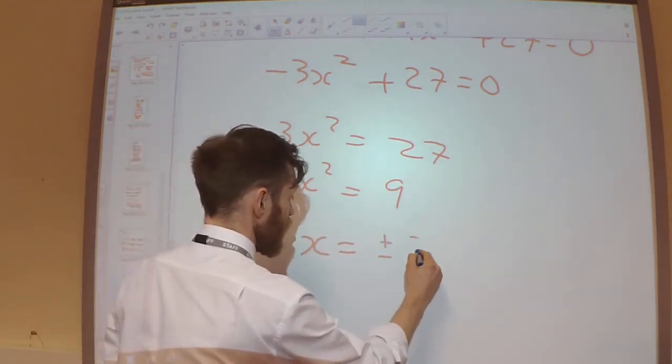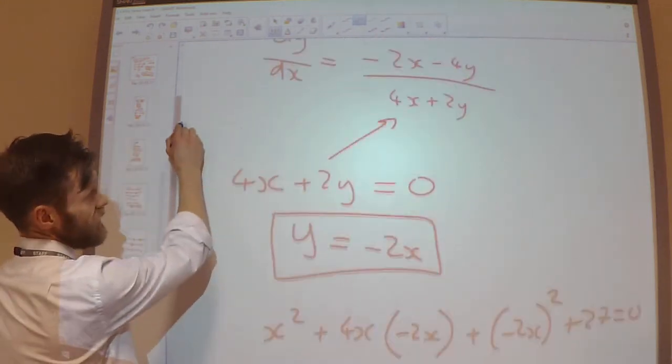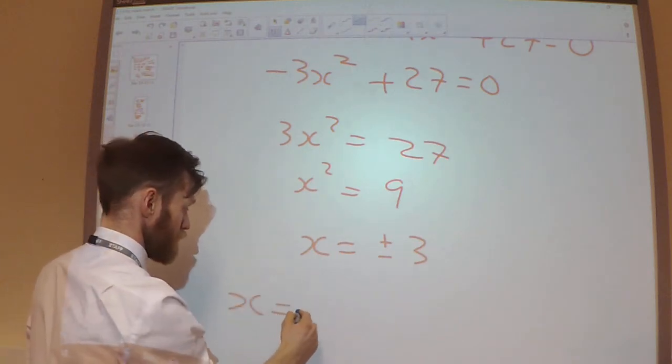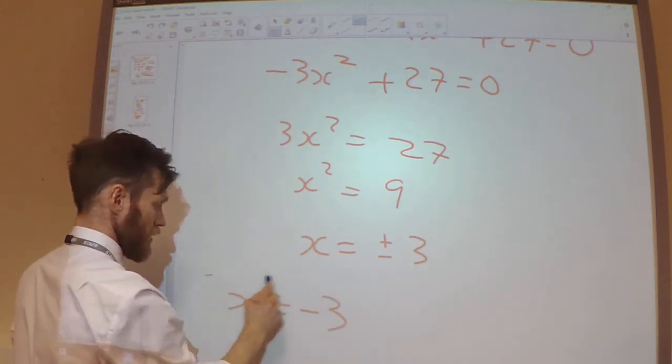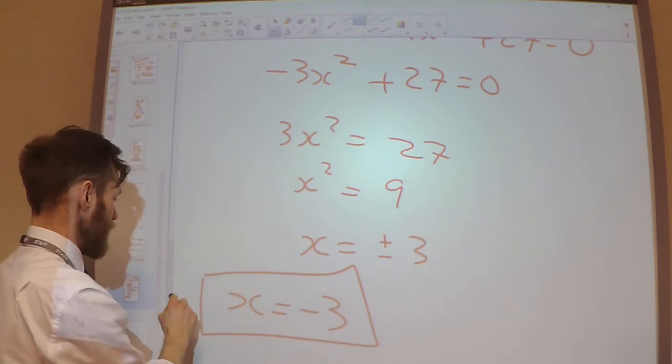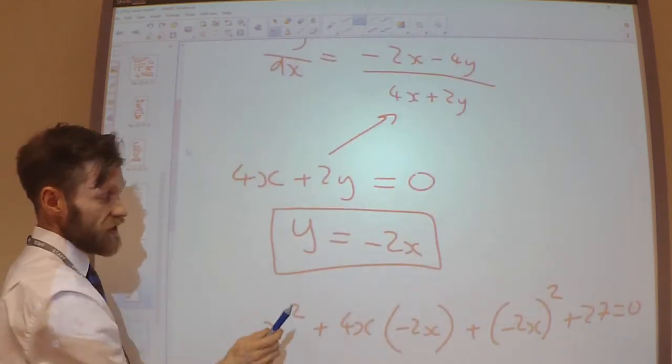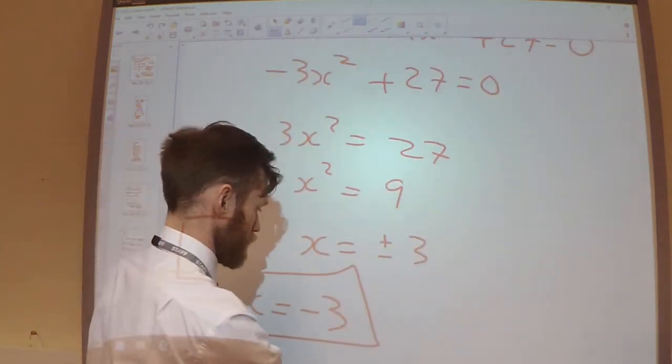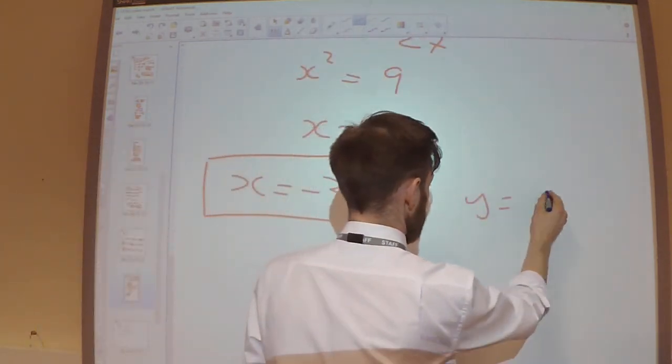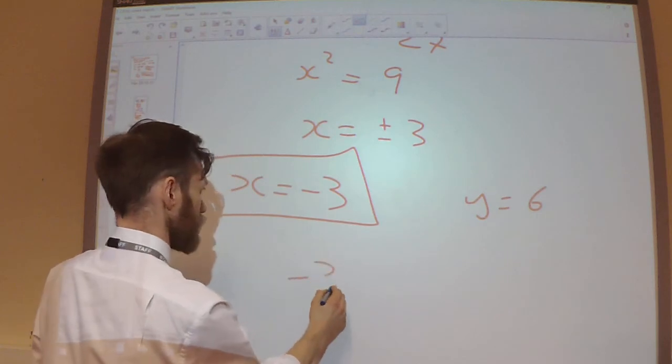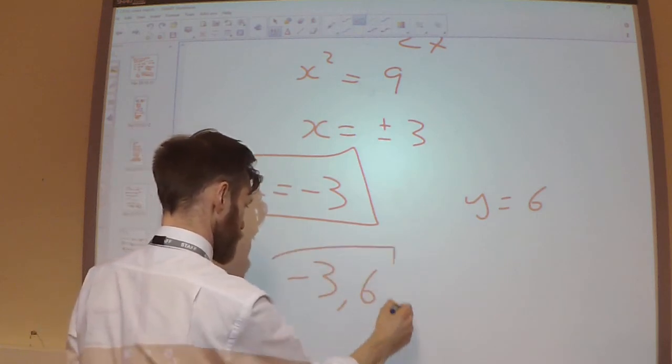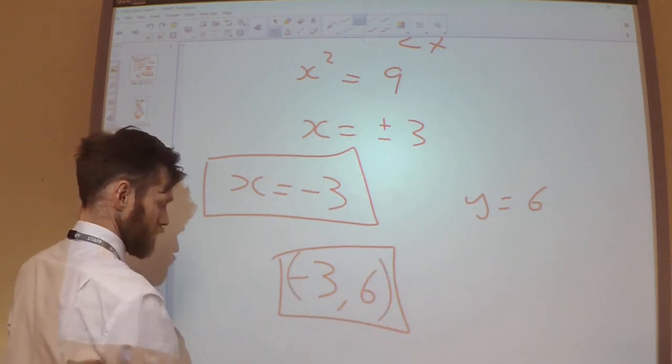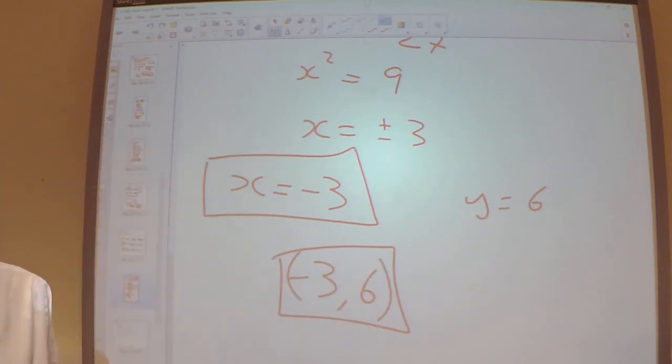However, we know that x is negative. So x equals minus 3, and I need the y coordinate. So if I substitute minus 3 in here, I get y equals 6. And there we go. It's solved. Thank you.